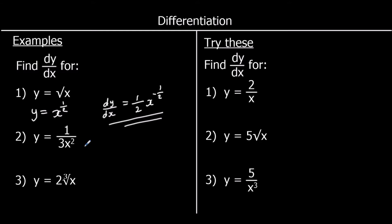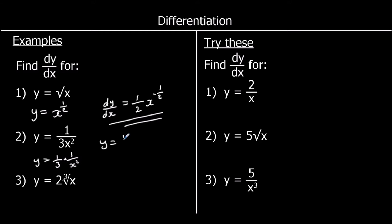For the second one, we've got y equals one over three x squared. We can write it as one third times one over x squared. One over x squared is the same as x to the power of negative two — when we have a negative power we can flip the fraction, taking x squared to the top by making it negative two.